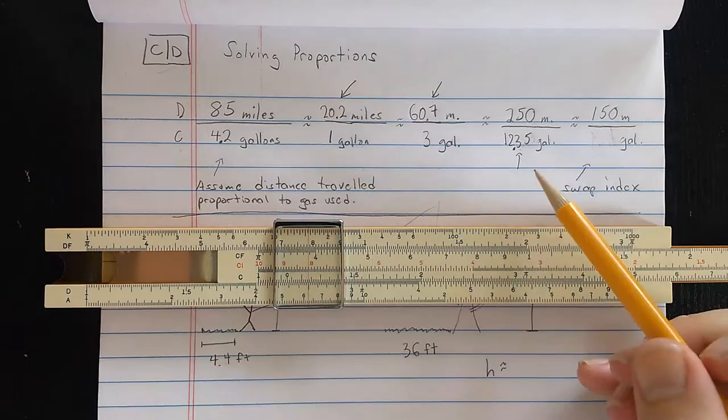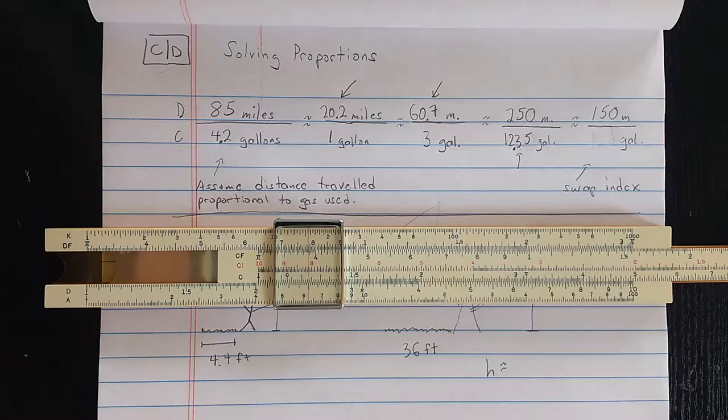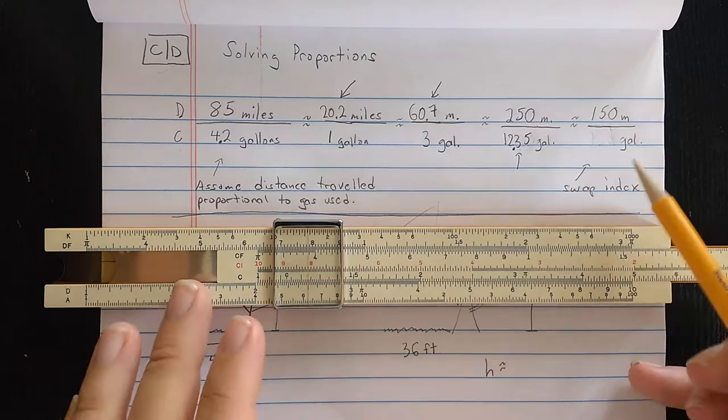And then the correct decimal placement there is about 12.35 gallons. Near 1, you have very high resolution, so you might even sometimes get a fourth digit, or a guess for a fourth digit. But again, that's really a guess.